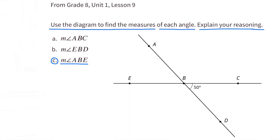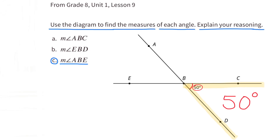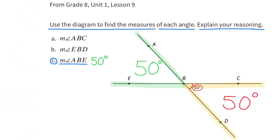C: the measure of angle ABE, which will be the alternate interior angle of angle CBD. That alternate interior angle is ABE, so that will also be 50 degrees.